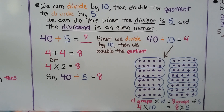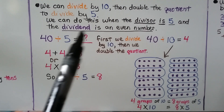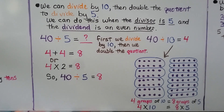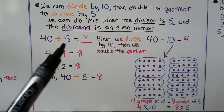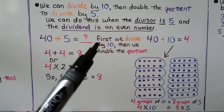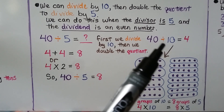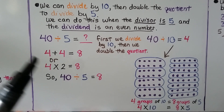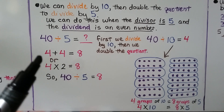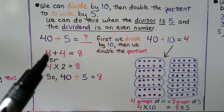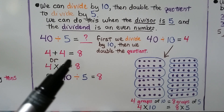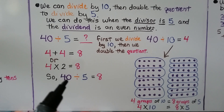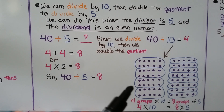We can divide by 10 then double the quotient to divide by 5. We can do this when the divisor is 5 and the dividend is an even number. For 40 divided by 5: first we divide by 10 — 40 divided by 10 is equal to 4. Then we double the quotient: 4 plus 4 equals 8, or 4 times 2 equals 8. So 40 divided by 5 is equal to 8.